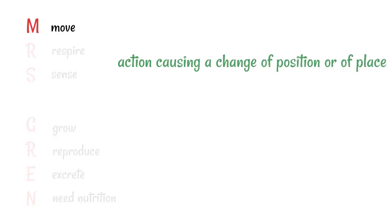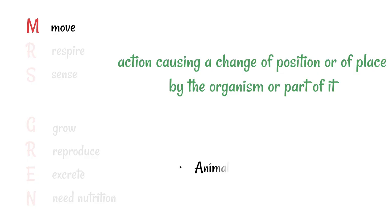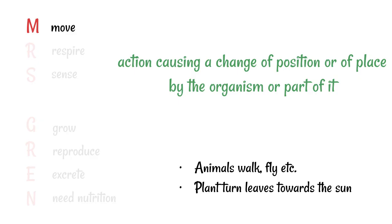Movement — this one's pretty obvious to define. It's an action causing a change of position or place by the organism or part of it. Obviously animals can walk and fly, things like that. People often struggle with the idea of movement in plants, but they can all turn their leaves towards the sun, and there are other examples of plant movement as well.